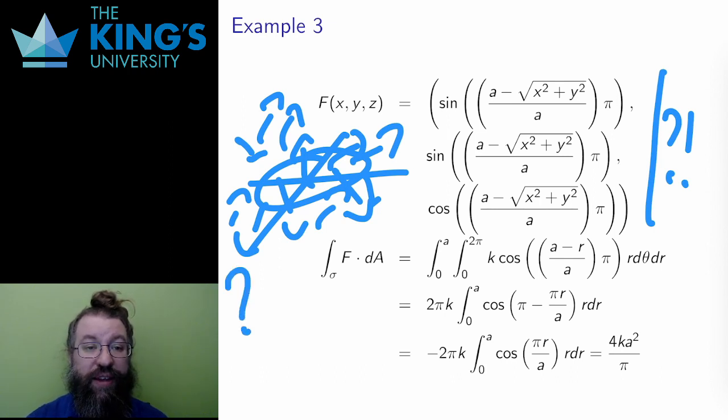What is the net effect? How does it all average out? And this is what a flux integral calculates, the net effect of all the movement of the field through the surface.